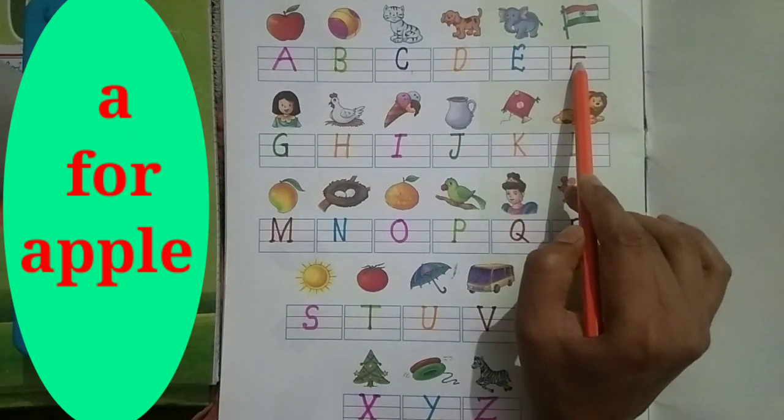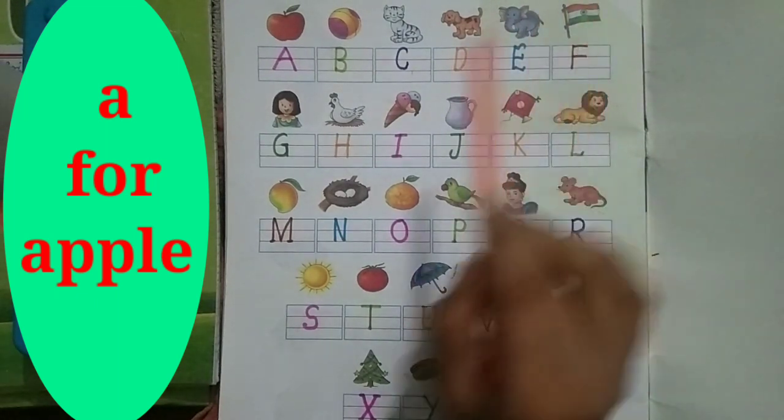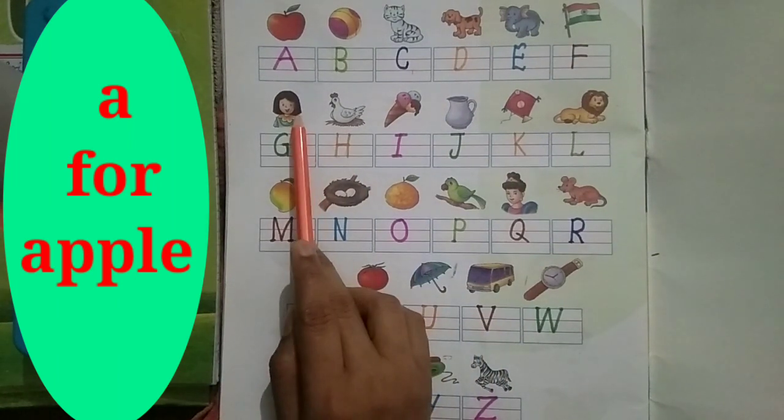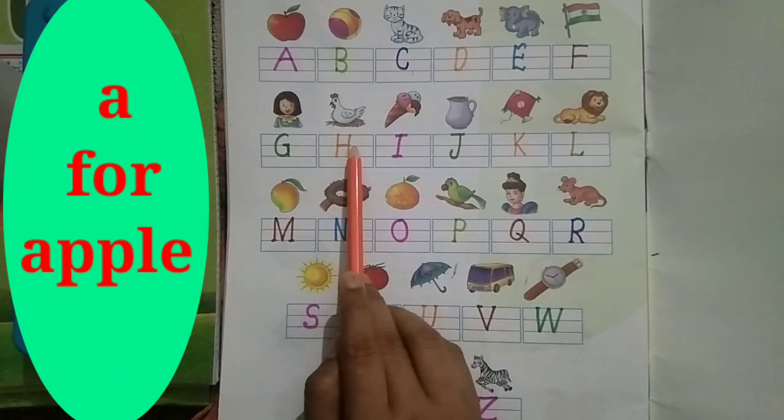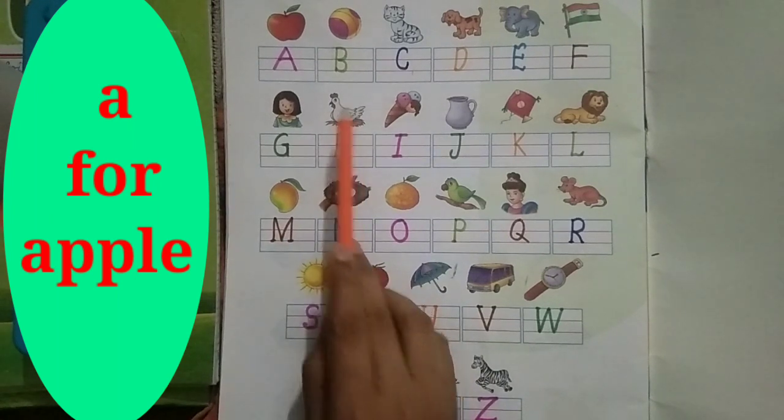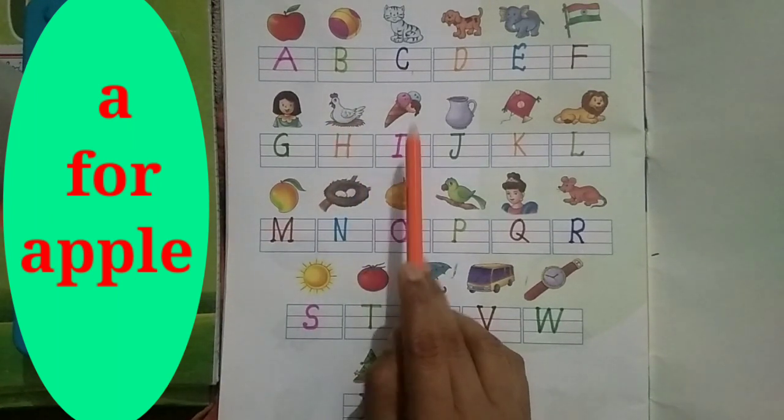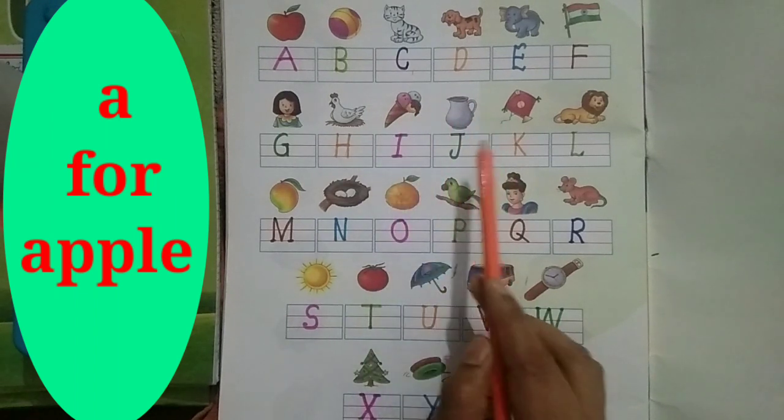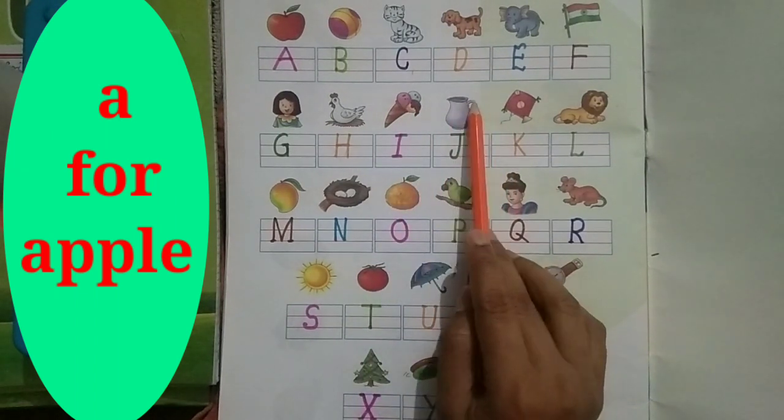F for flag, G for girl, H for hen, I for ice cream, J for jug.